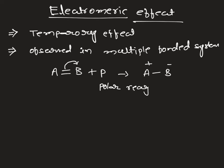We can see this kind of displacement of pi electrons. If we remove the polar reagent from the system, again B will give pi electrons back, which will reform the pi bond in AB. That is why it is a temporary effect in presence of polar reagents.